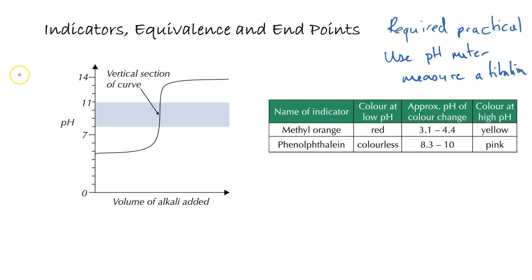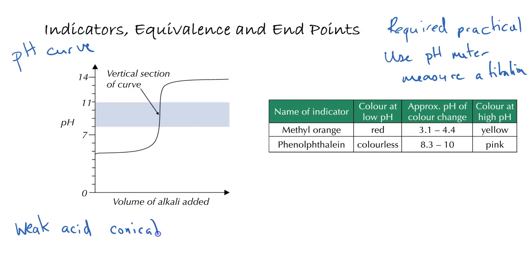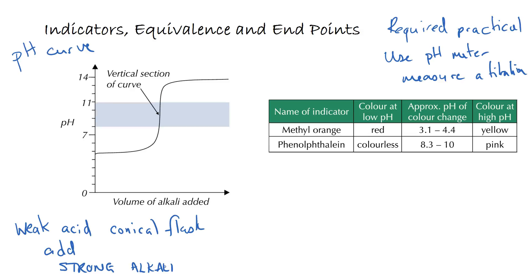Here on the left hand side we've got an example of the sort of data you might expect to get from a pH curve. In this reaction we've added a weak acid in the conical flask — we've pipetted that in — and from the burette we are adding a strong alkali to that.